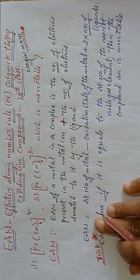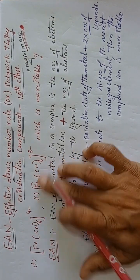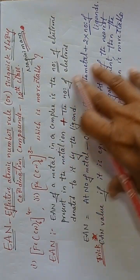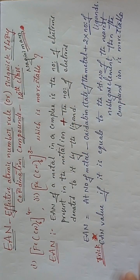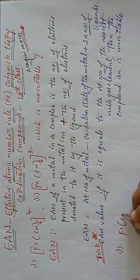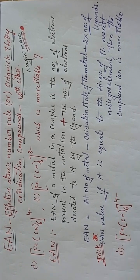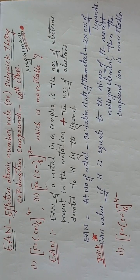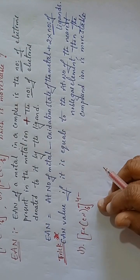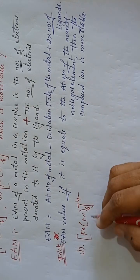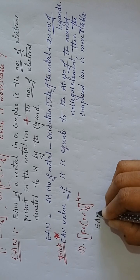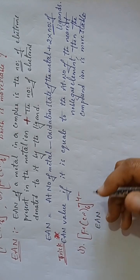Now we are going to calculate the EAN value. I am taking two complex ions. First example: [Fe(CN)₆]⁴⁻. I am going to calculate the EAN value of this complex ion. EAN of iron — first, what is the atomic number of iron? Iron atomic number is 26.